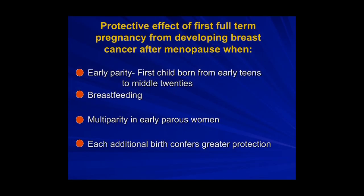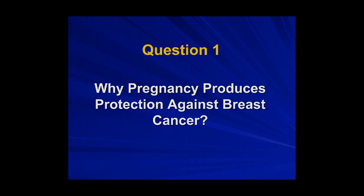I will concentrate on this specific area in the lifespan of the woman in which a woman has an early first full-term pregnancy. This is very well demonstrated in the literature. Early parity — first child born from early teens to mid-twenties — has a significant protective effect. Breastfeeding, multiparity, and each additional birth confer greater protection. Therefore, the question we need to ask is: why does pregnancy produce protection against breast cancer?